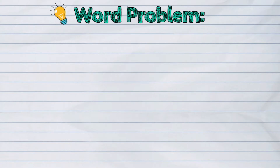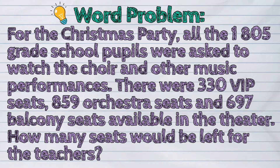Let's take this example. For the Christmas party, all 1,805 grade school pupils were asked to watch the choir and other music performances. There were 330 VIP seats, 859 orchestra seats, and 697 balcony seats available in the theater. How many seats would be left for the teachers?